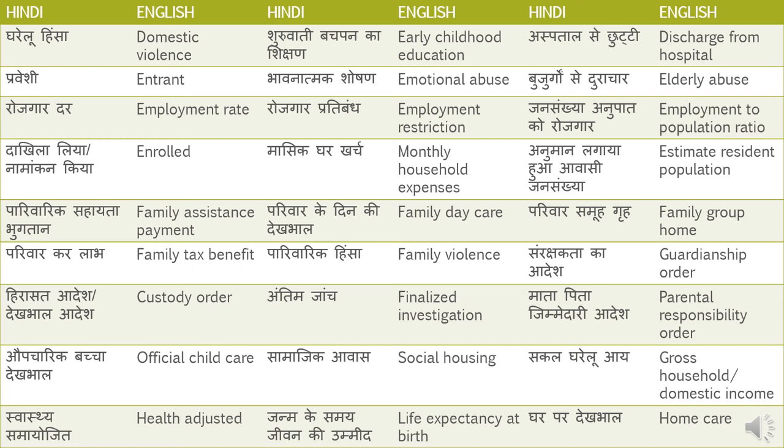Samajik awas — Social Housing. Social, as you know, is samajik. Sakal gharelu aay — Gross Household or Domestic Income. Gross is sakal.